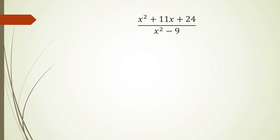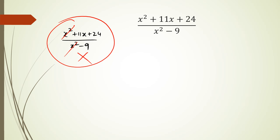Now something with quadratics. The amount of times I see students write up (x squared plus 11x plus 24) over (x squared minus 9) and immediately try to cancel across the addition and subtraction signs — you can only cancel things out if they are being multiplied, or if they're inside brackets. You cannot do this when there's a plus or minus sign involved.